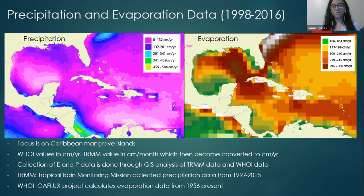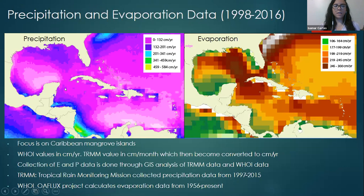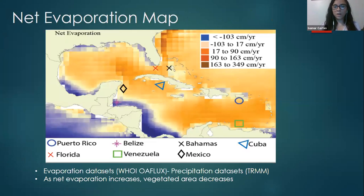Now we have to derive all of these different parameters for our model. First, we start with the net evaporation data — gathering precipitation and evaporation data from different sources to build an overlying net evaporation map showing the extent of net evaporation across the Caribbean. Data is gathered from the Tropical Rain Monitoring Mission from 1998 to 2016 and an evaporation dataset from the Woods Hole Oceanographic Institute OAFlex project, also from 1998 to 2016, to study the net evaporation region across the Caribbean and make hypotheses about how mangrove vegetation will react depending on spatial location.